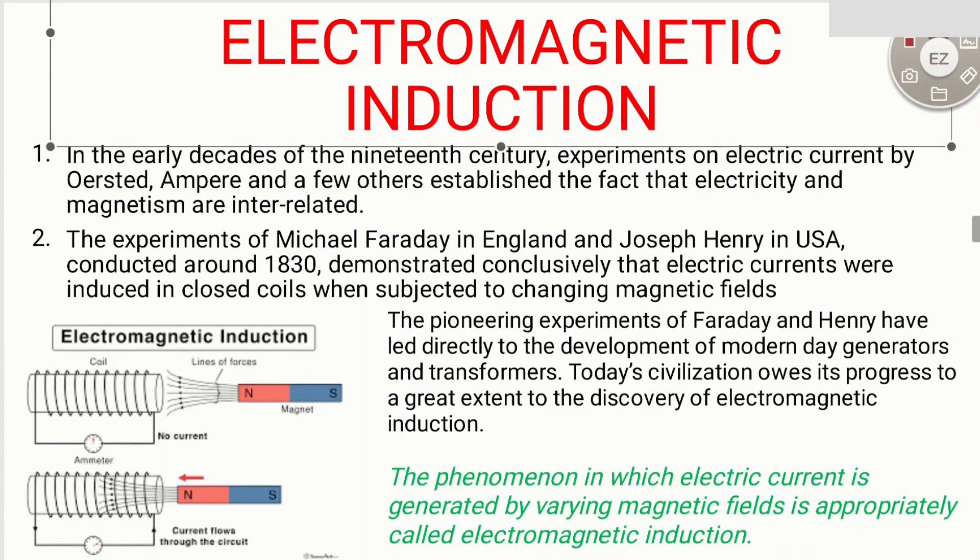Michael Faraday in England and Joseph Henry in the USA both conducted experiments around 1830, demonstrating that electric currents were induced in a closed coil when subjected to changing magnetic fields. A bar magnet and a solenoid coil were taken, along with a micro-ammeter to measure small currents. When the bar magnet is moved with respect to the coil, the ammeter shows deflection.